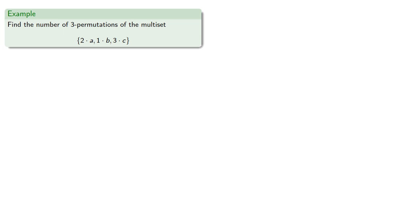For example, suppose we want to find the number of 3 permutations of the multiset. Now, we could have 0, 1, or 2 a's.